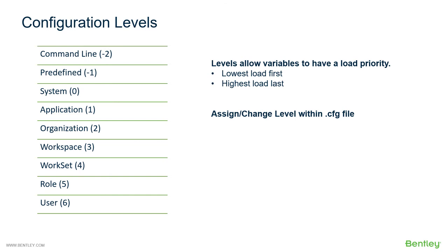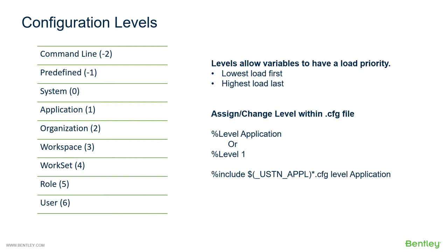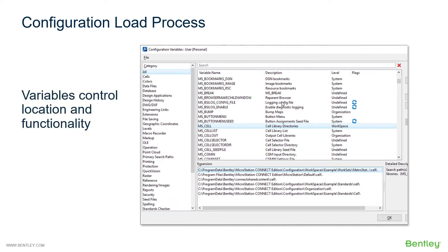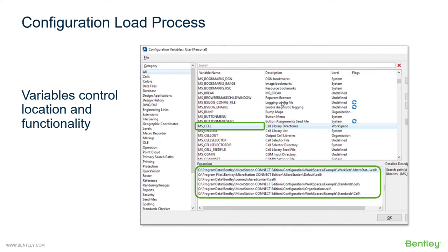You can change or assign levels within a cfg file. For the application level, you can put a line that says '%level application' to change the level, or use a numeric value that equates to the level. You can also specify a level at the end of an include statement — for example, at the application level. Looking again at the configuration variable dialog, note that variables control location and functionality. The levels indicated on the right show the last level at which that variable was assigned or modified.